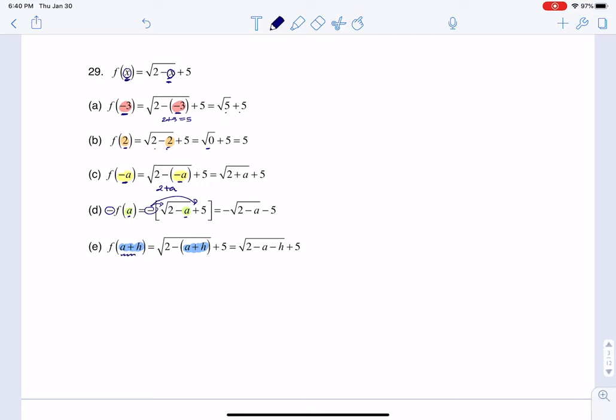Here we have an a plus h so I put a plus h and again I have to remember to distribute the negative to the a and to the h, so that's why you see minus a minus h here. All right and that plus 5 is just always hanging out. Let me go ahead and highlight it, right? The plus 5 on the outside, and when I say on the outside I mean on the outside of the radicand, is always just hanging out.